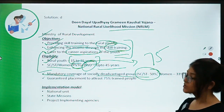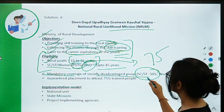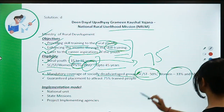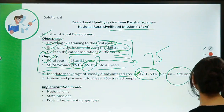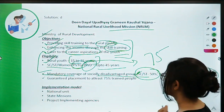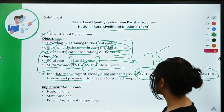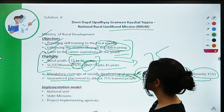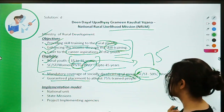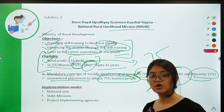There is mandatory coverage of socially disadvantaged groups: 50% of beneficiaries will be from the SC/ST group, women will comprise 33%, and minorities 15%. Additionally, there is a guaranteed placement for at least 75% of all trained candidates under this scheme.